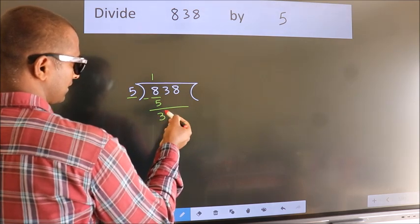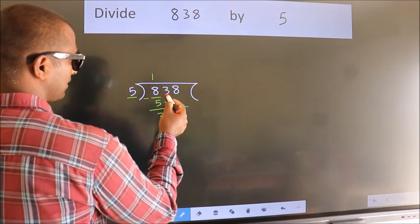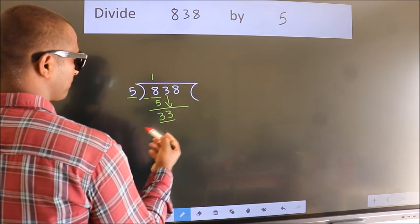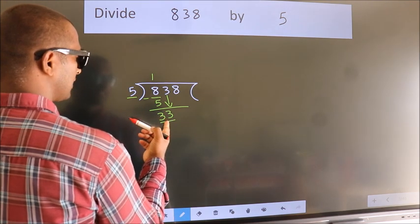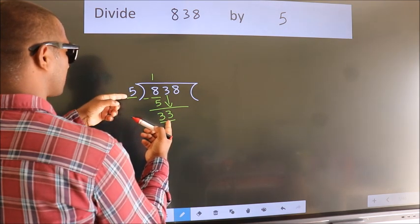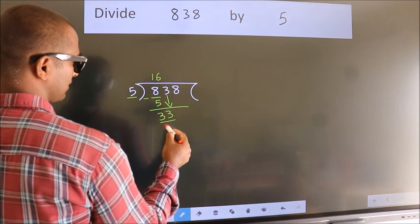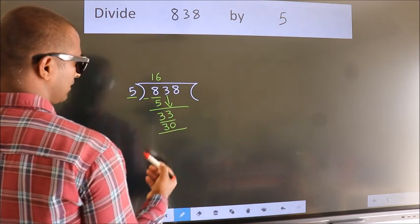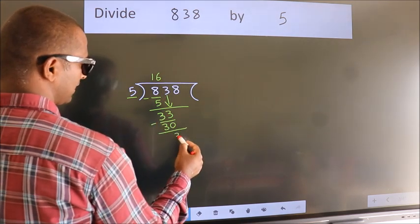After this, bring down the beside number. So, 3 down. So, 33. A number close to 33 in the 5 table is 5×6=30. Now we subtract. We get 3.